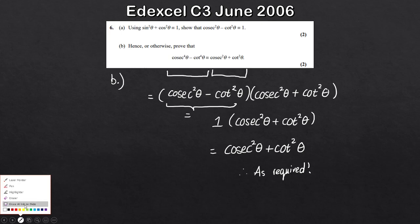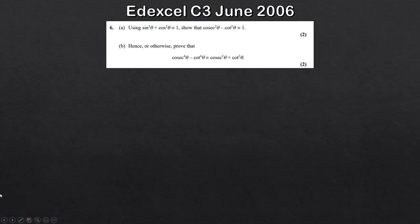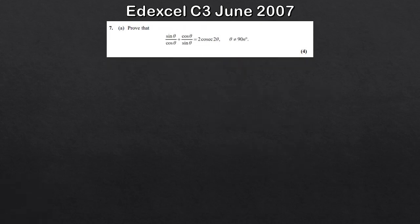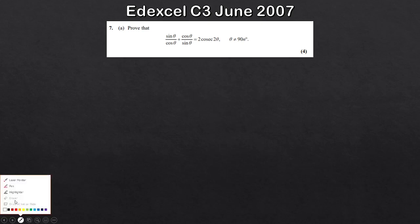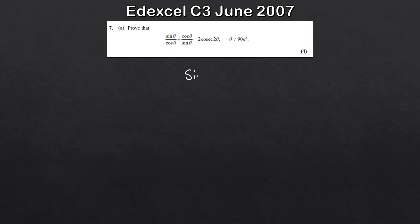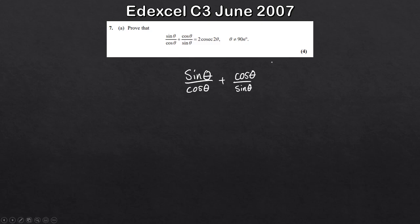So like you can see, this one is actually really quick once you spot that it's a difference of two squares — basically three lines. Some of them are a lot easier than they look; it's just getting the practice and the intuition. So let's take a look at a trickier one. What we've got is sinθ over cosθ plus cosθ over sinθ, and I want to show this equals 2cosec 2θ.